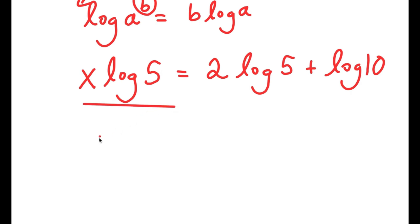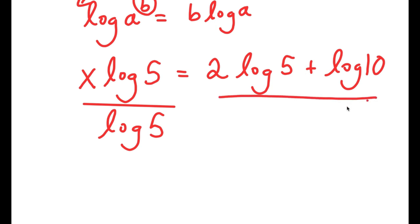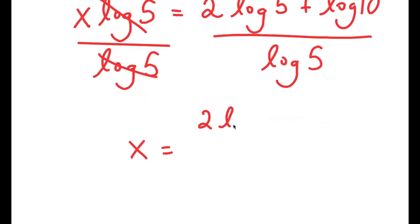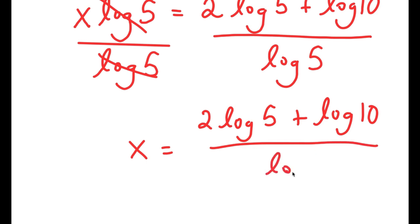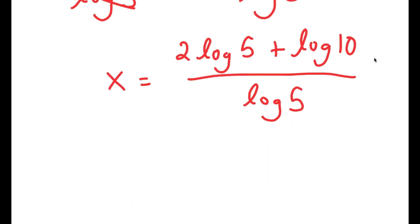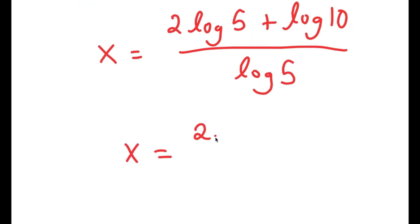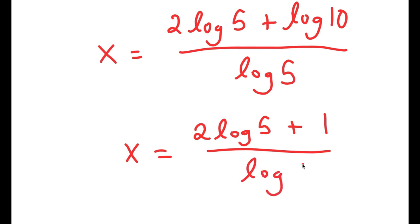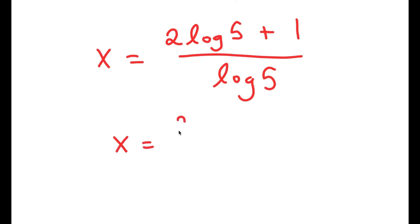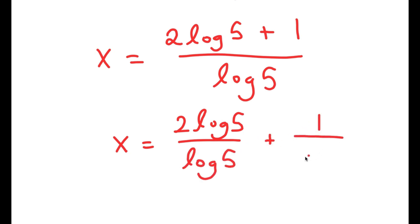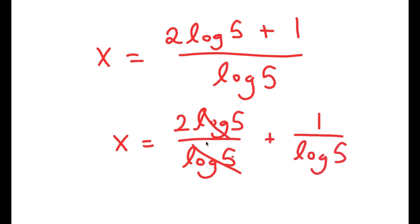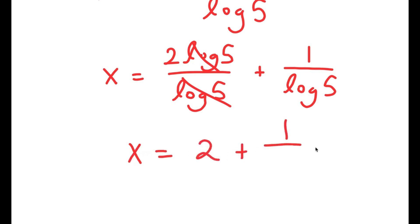Now I'm going to divide both sides by log 5, so these two cancel out, and I get x is equal to 2 times log 5 plus log 10 over log 5. Since log 10 is equal to 1, I get x is equal to 2 times log 5 plus 1 over log 5. These two log 5s cancel out, so I get x is equal to 2 plus 1 over log 5.